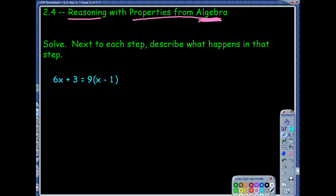Before we actually do one, I'm just going to have you help me solve this algebra problem — it's an equation. What makes this a little different than your traditional algebraic equation is that next to each step, I'm going to have you tell me what to write by describing what happens in that step. So when you look at this equation, we're trying to solve for x.